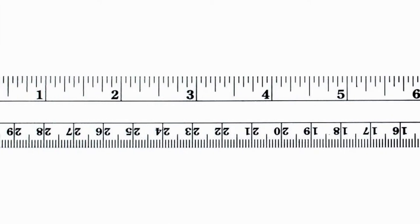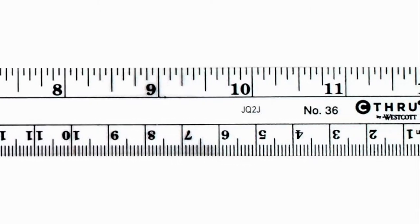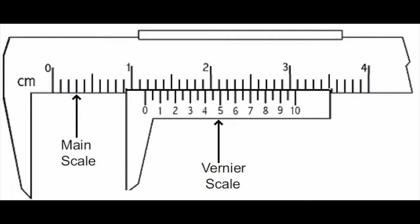The vernier scale can effectively give a reading between two graduation marks, something that would otherwise have to be estimated. As you can see, the apparatus consists of two parallel adjacent scales.